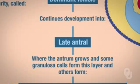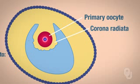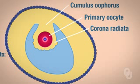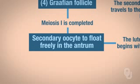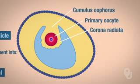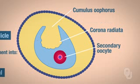Some of the granulosa cells of this layer will form the corona radiata, which surrounds the primary oocyte, along with the cumulus oophorus. After all of this happens, we have what's called a Graafian follicle. Once the Graafian follicle has formed, meiosis I is completed. Remember from oogenesis — when meiosis I is completed, you are left with the secondary oocyte, so we're no longer dealing with the primary oocyte. The secondary oocyte is going to be floating freely in the antrum, as you can see from the diagram.